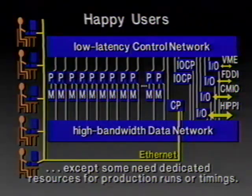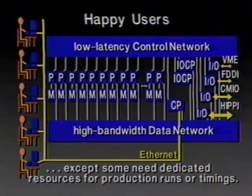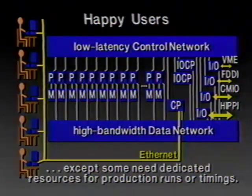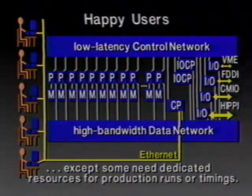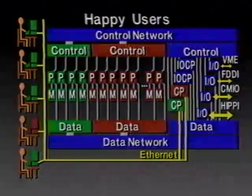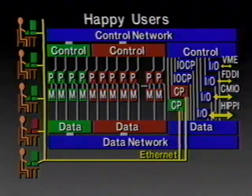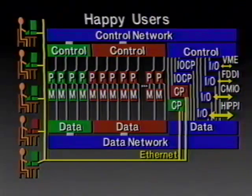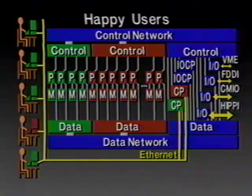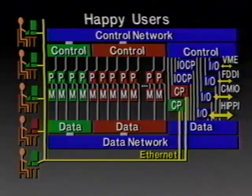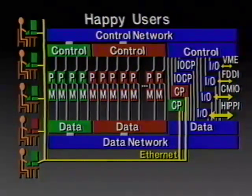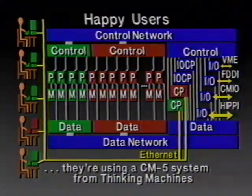Almost. They're happy, except that some of them need dedicated resources within the machine — just time sharing isn't good enough. Sometimes one user needs a particular bunch of processors or a particular I/O device, perhaps wants to time a program and needs dedicated resources to make sure nothing else is interfering. So we'll fix that by providing for dividing the system into pieces when appropriate, with several control processors so different ones can be dedicated to managing different parts of the system. And now everything is wonderful — we have happy users because they're using a CM5 from Thinking Machines Corporation.